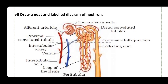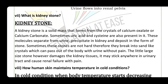Question six: Draw a neat and labeled diagram of a nephron from the book. Question seven: What is a kidney stone? A kidney stone is a solid mass that forms from crystals of calcium oxalate and calcium carbonate. Sometimes uric acid and other substances are also present. These molecules separate from urine, precipitate in the kidney, and deposit in the form of a stone. Sometimes these stones are not hard and break into sand-like crystals which can pass out of the body with urine without pain.